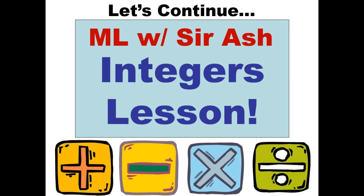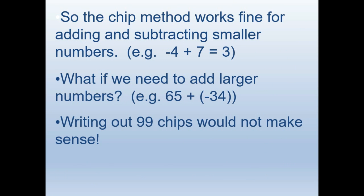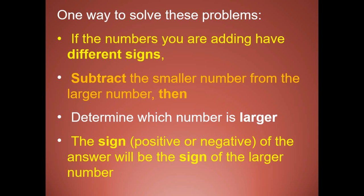Now let's consider a more challenging question. This chip method works fine for adding smaller numbers, but what if we need to add larger numbers? For example, 65 and negative 34. If we consider these numbers through chips, it wouldn't make sense. So one way to solve this kind of problem is the use of the rule method.